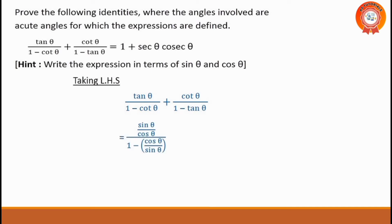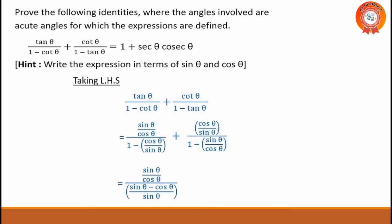That is: sin θ/cos θ, all divided by (1 minus cos θ/sin θ), plus cos θ/sin θ, all divided by (1 minus sin θ/cos θ). The denominator of the second term becomes (cos θ minus sin θ) divided by cos θ, and the first term's denominator becomes (sin θ minus cos θ) divided by sin θ.